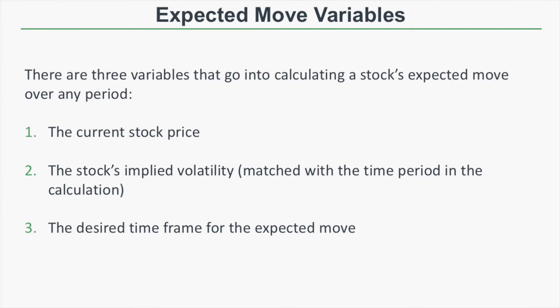To calculate the expected move for any stock, you need three variables: you need the current stock price, you need the stock's implied volatility — which is matched with the time period you're using for the calculation — and then you need your desired time frame for the expected move.